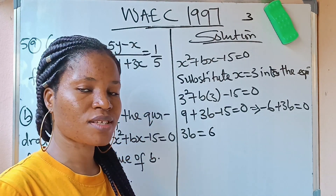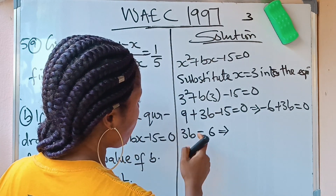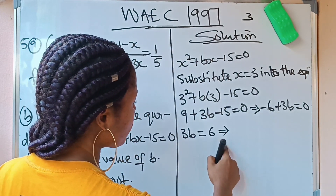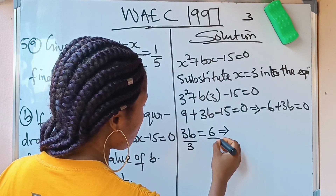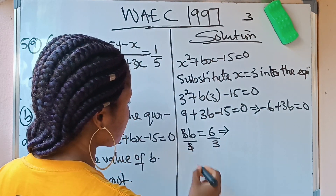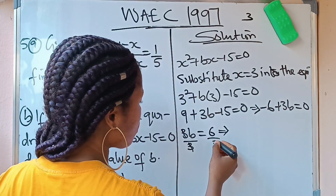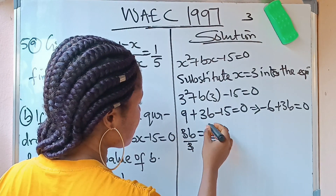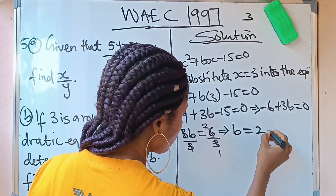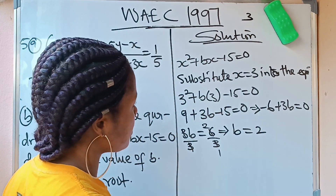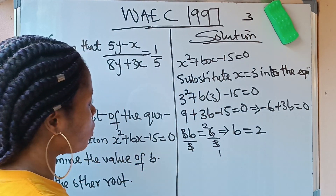Now we move negative 6 to the other side — it becomes plus 6 — so 3b equals 6. To find b, we divide both sides by 3: 3 divides 3 leaving 1, and 6 divided by 3 gives 2. So our b is equal to 2.